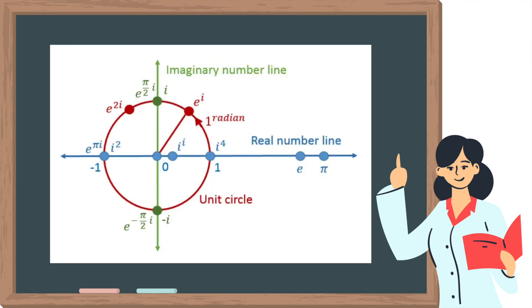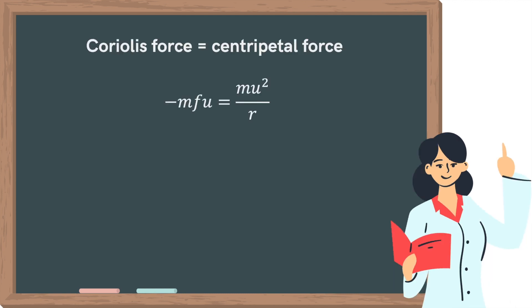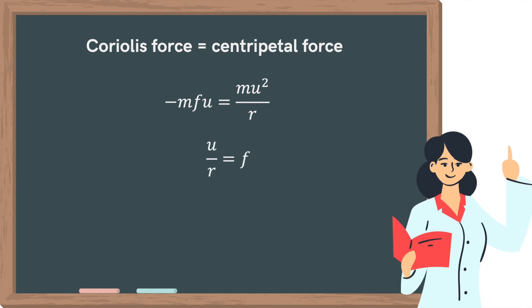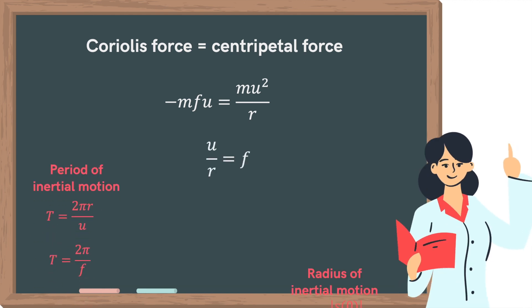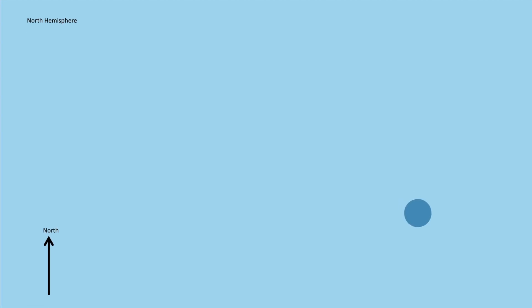As we know, complex numbers are two-dimensional numbers that lie on a circle in the complex number plane, therefore telling us that the motion is circular. We can also calculate the period and radius of the inertial motion by equating the Coriolis force to centripetal force. Indeed, a parcel of water in the ocean is found to describe a spiral pattern of motion, which diminishes as its initial energy is dissipated.